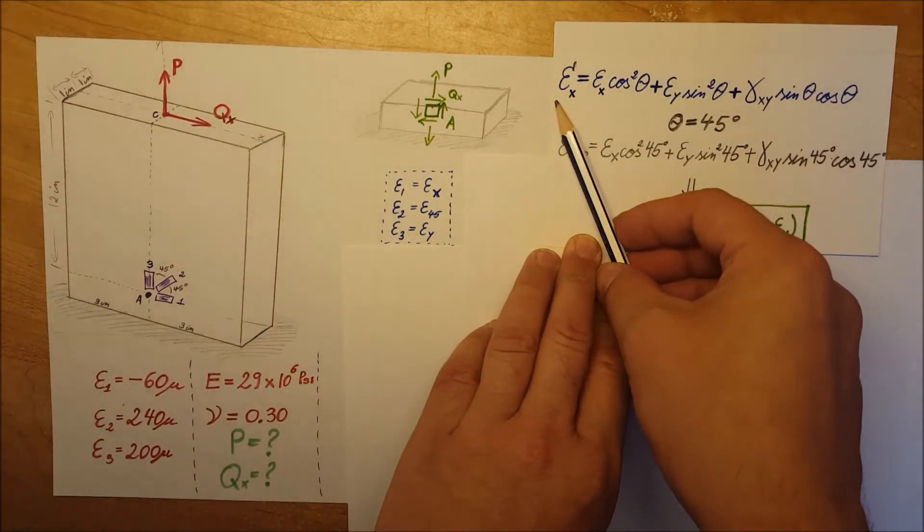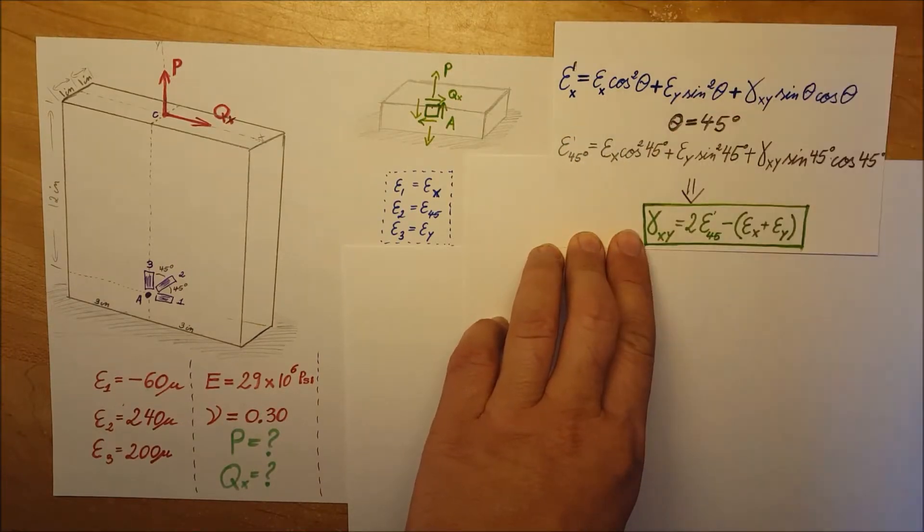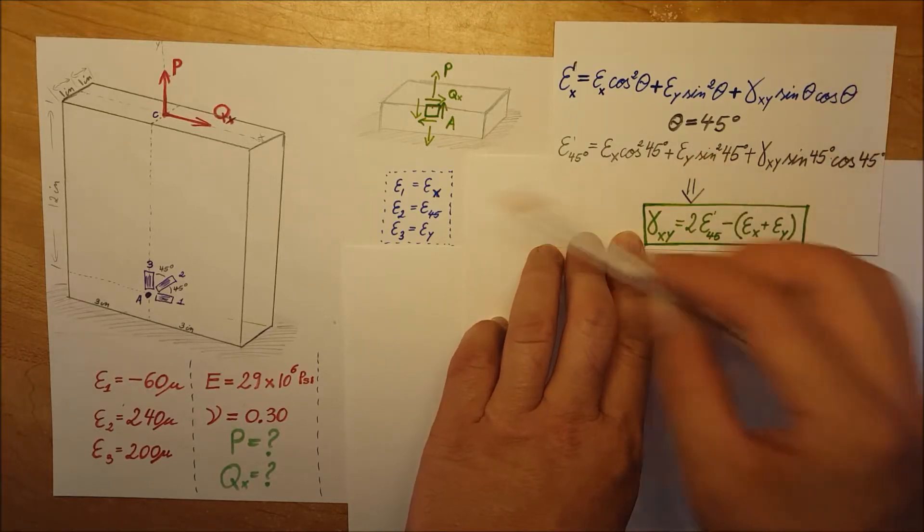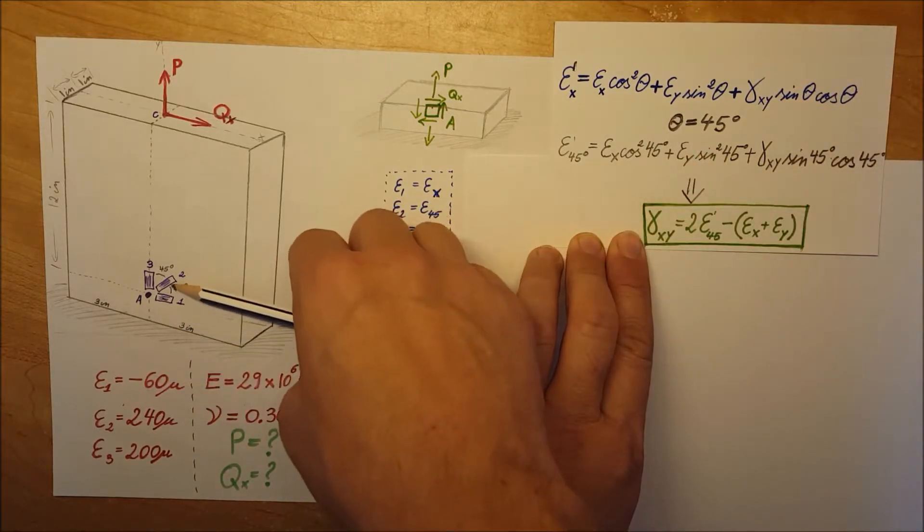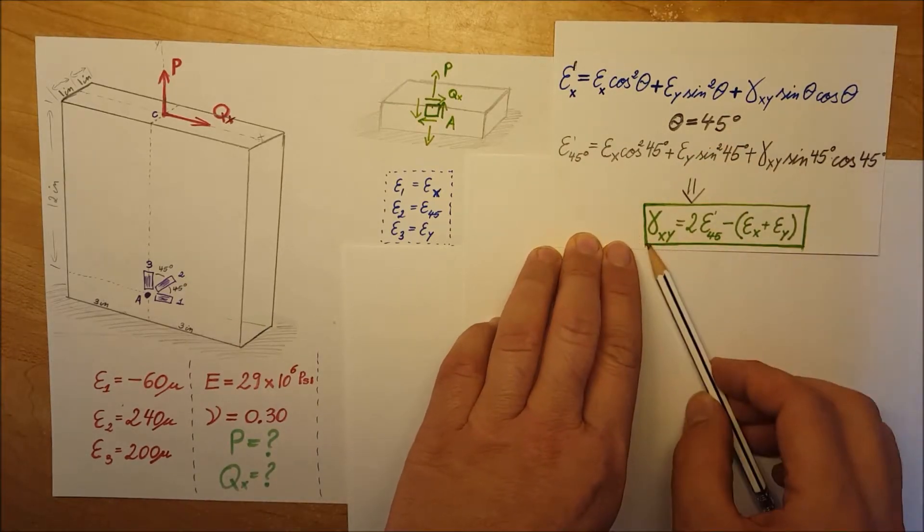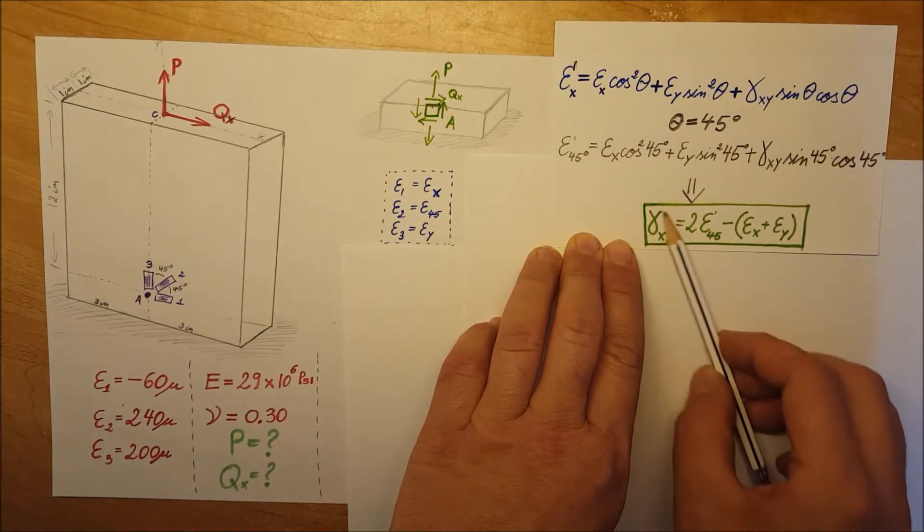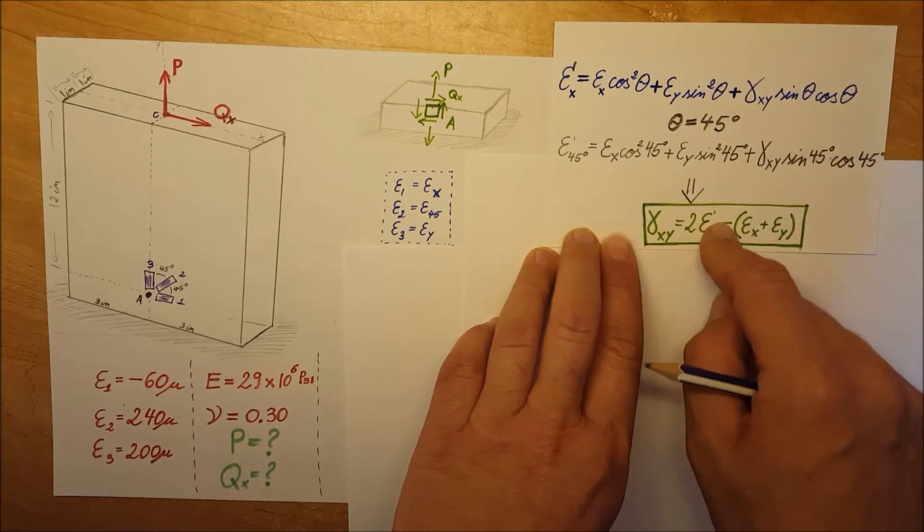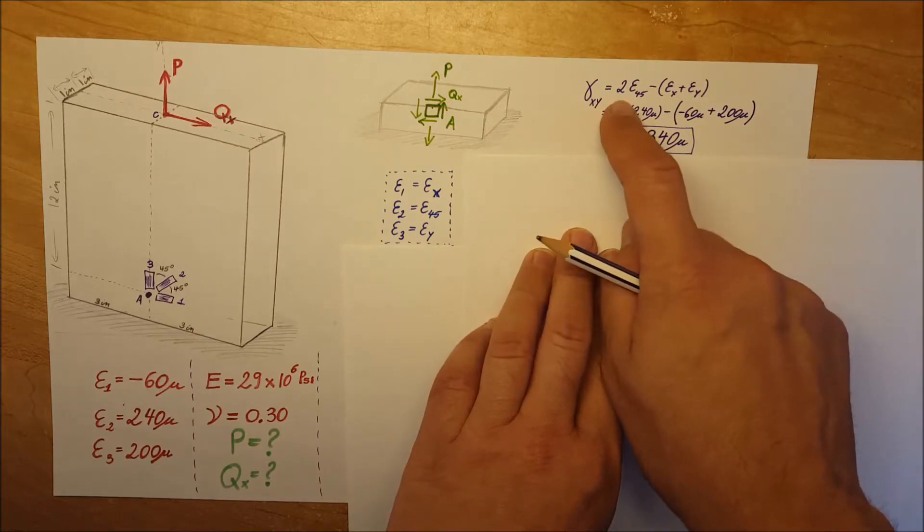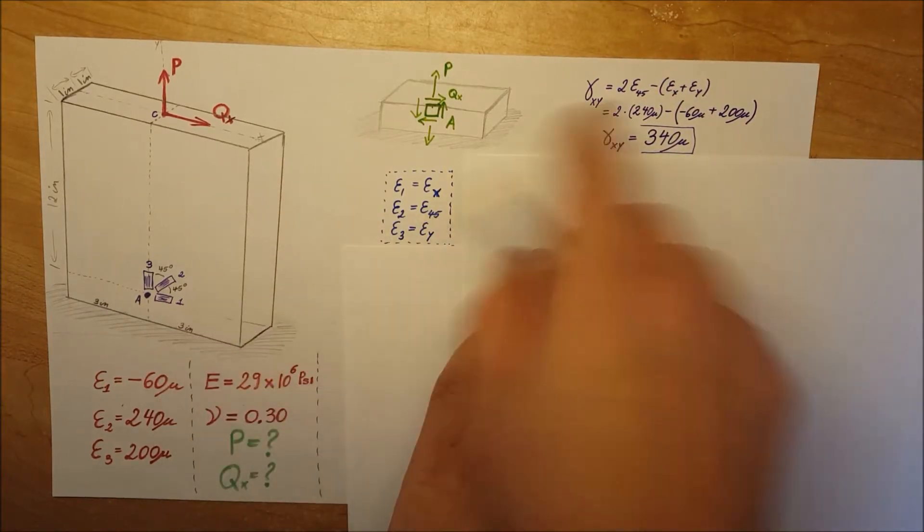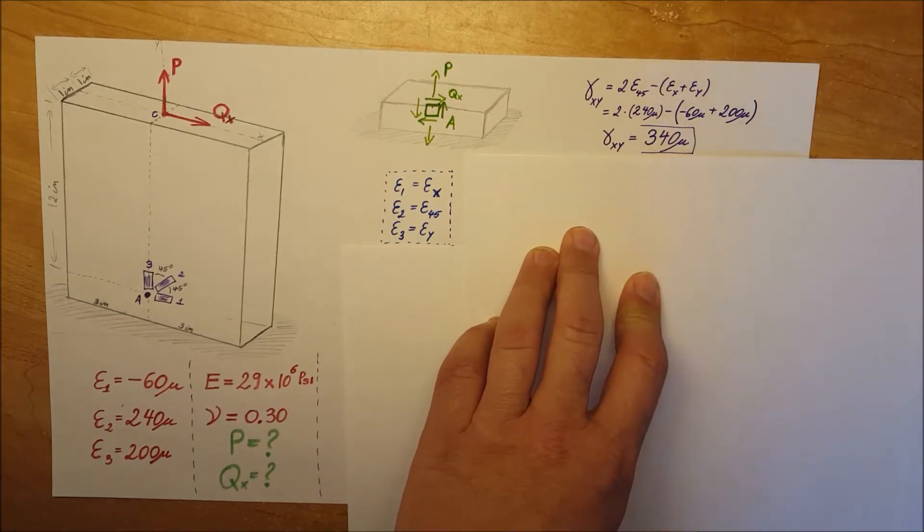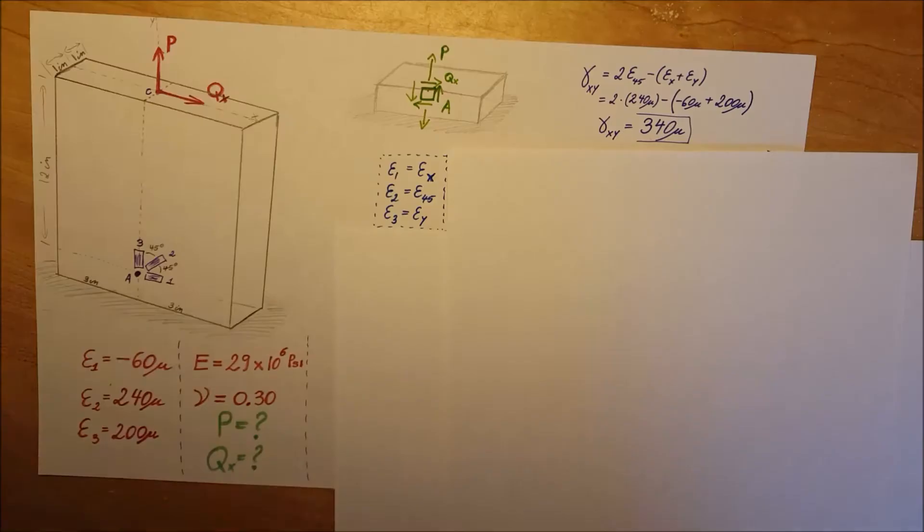I'm going to use this formula which is a monster we learned in our book. In the special case where we have 45 degrees, we can plug it in and solve for the shear strain. It simplifies down to this formula. I'm going to plug in the values that I have and calculate my shear strain, which is 240 microns.